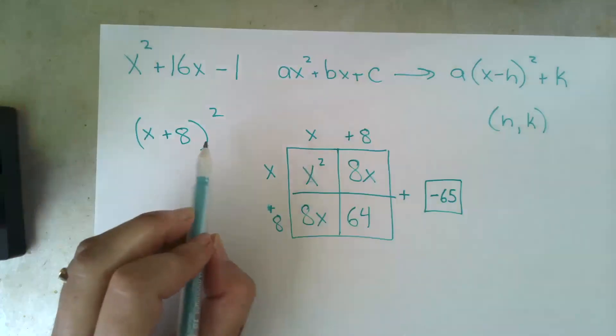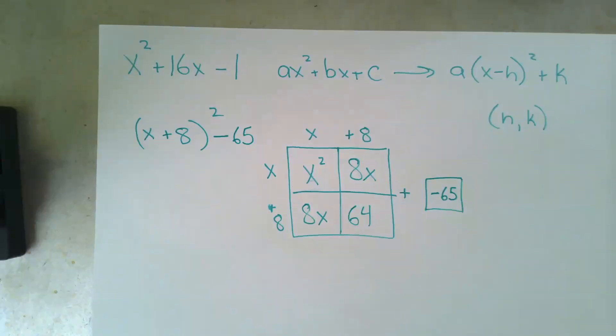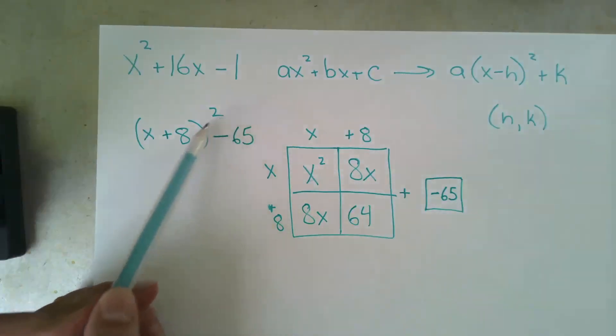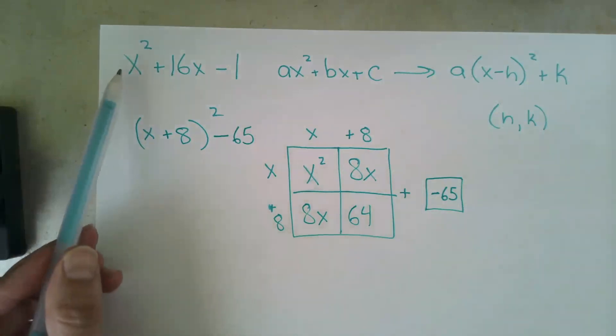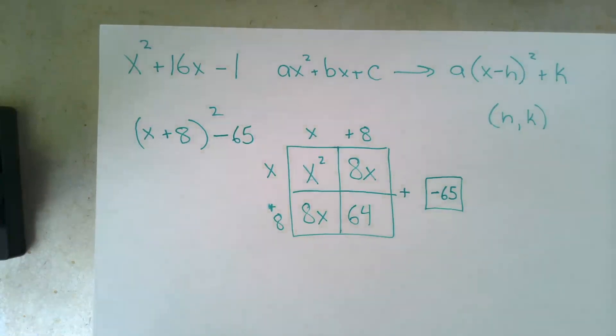And instead of writing plus negative 65, I'm just going to call that minus 65. And that is completing the square to convert standard form to vertex form. These are the same. Let's show that they're the same.